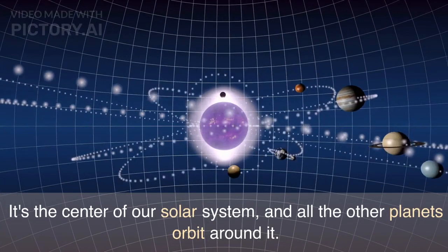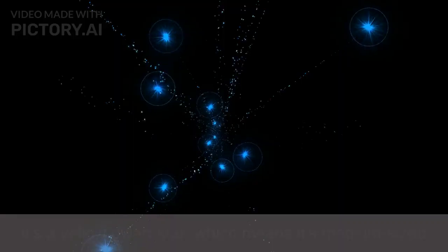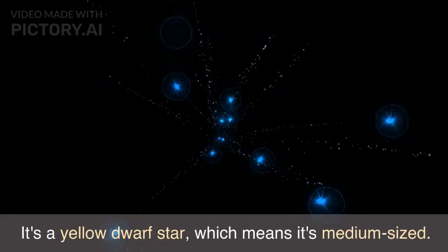It's the center of our solar system, and all the other planets orbit around it. It's a yellow dwarf star, which means it's medium-sized.